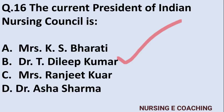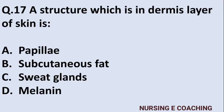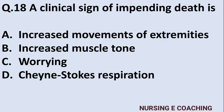Question 17: A structure which is in the dermis layer of skin — Option A: papilla, Option B: subcutaneous fat, Option C: sweat gland, Option D: melanin. Answer is Option C — sweat gland. Sweat glands are found in the dermis layer.